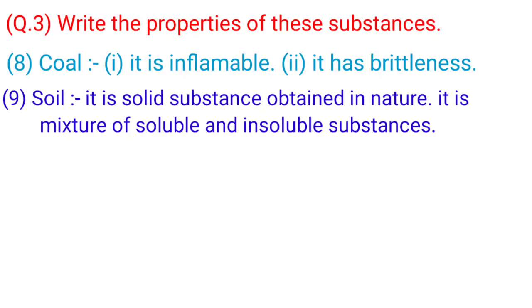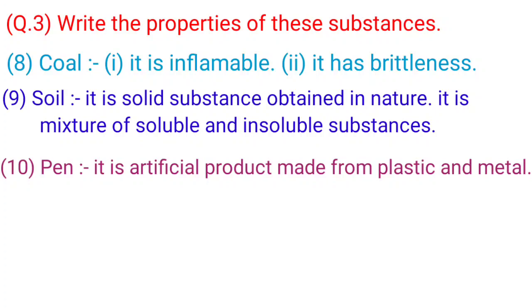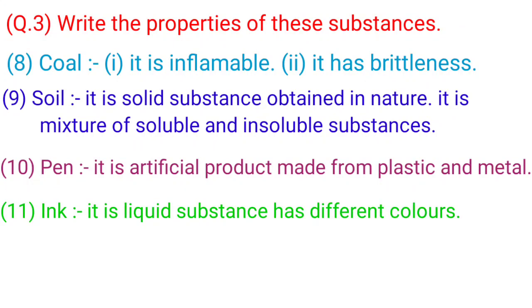9. Soil: It is solid substance obtained in nature. It is mixture of soluble and insoluble substances. 10. Pen: It is artificial product made from plastic and metal.